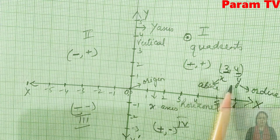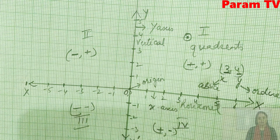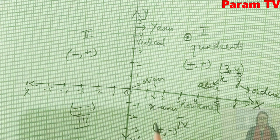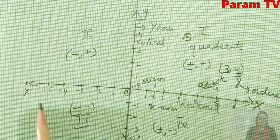When a point is given in brackets as two digits, like (3, 4), the first value is always x and the second value is always y. x is called the abscissa and y is called the ordinate. Abscissa is x and ordinate is the value of y. This is all about the Cartesian plane.